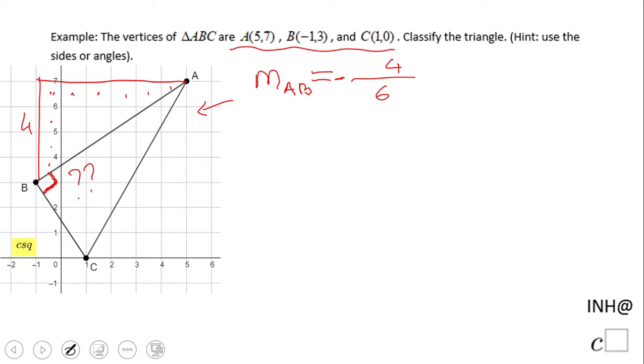It goes up from left to right. So the slope of AB is 4 over 6, which can be simplified by the way as 2/3. But what about the slope of BC?